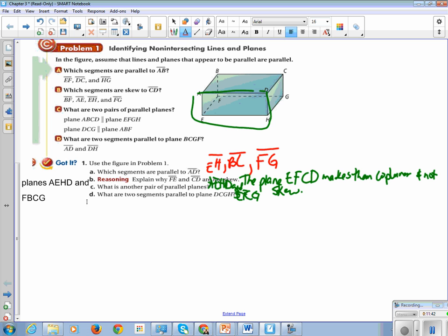Let's extend this page. What are two segments parallel to plane DCGH? So DCGH, I just need two segments. So, EF and AB. Love it. EF and AB. Awesome.